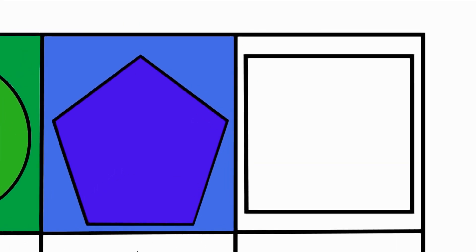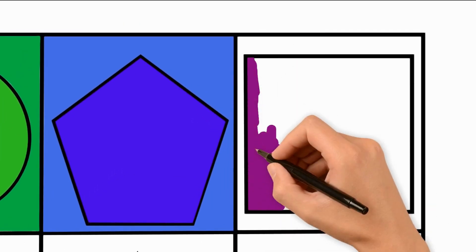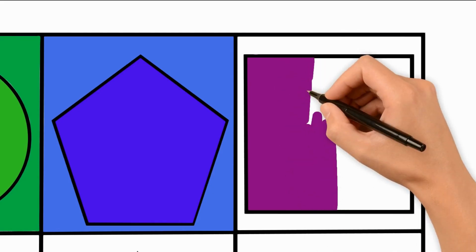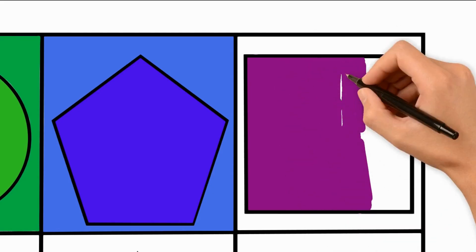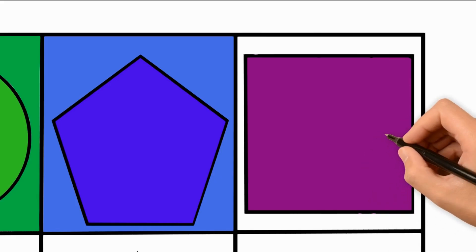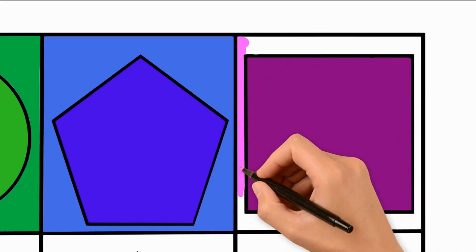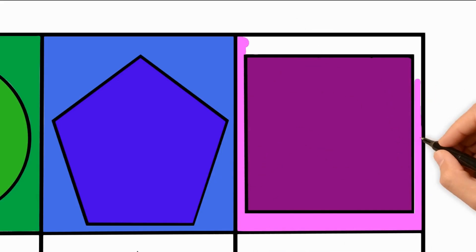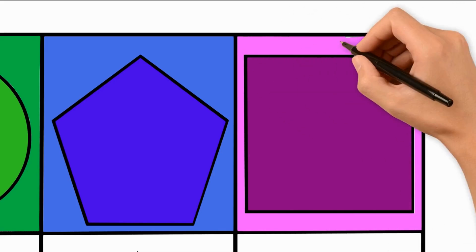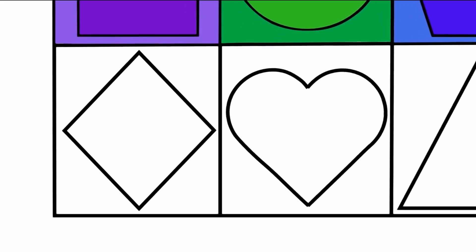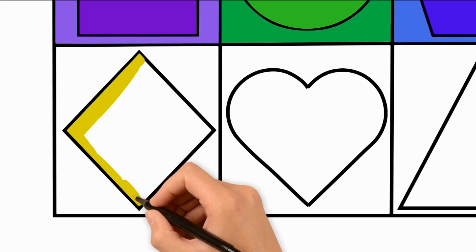The square I will color in shades of pink. The diamond is 2 shades of yellow.